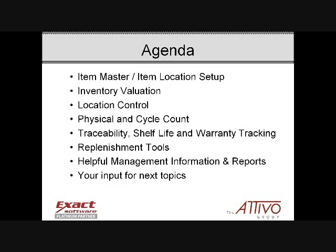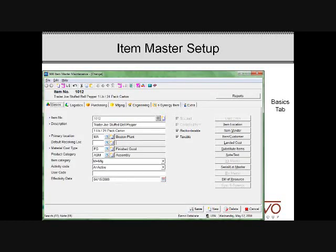Let's get started with the item master. The item master setup is where static information regarding an item is stored. There aren't any quantities, costs, or pricing on the item master — only things like whether this is a manufactured item, the two lines of description, and so on. As you can see on the right side, there are plenty of buttons for access to all of the information. This is one of the improvements that happened between Progression and McCola ES, so we didn't have to jump around to different menu screens.